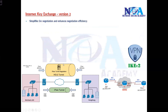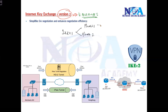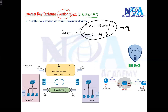The first enhancement is that IKEv2 simplifies the security association negotiation process and enhances efficiency. IKEv2 uses only around four messages, compared to IKEv1 where in phase 1 there are six messages in main mode or three in aggressive mode, and three more messages in phase 2 - totaling around six to nine messages. In IKEv2 all these messages are combined into four, making the negotiation process simpler and more efficient.